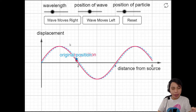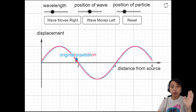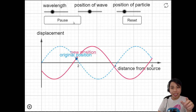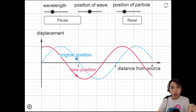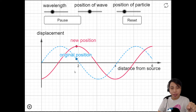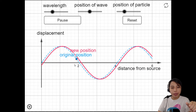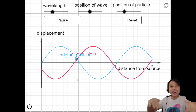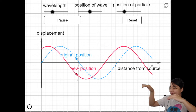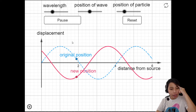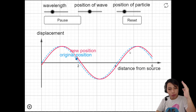On waves, these particles — if you're looking at a displacement-distance graph — don't move left and right. It's the wave that travels to the right. The ball just goes up and down. So the distance moved by the ball is really a vertical distance as it oscillates. It's riding the wave. This is a vertical motion as the wave moves to the right.